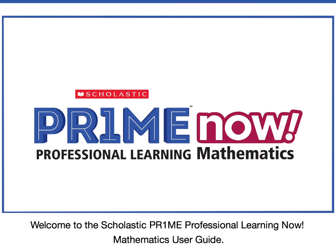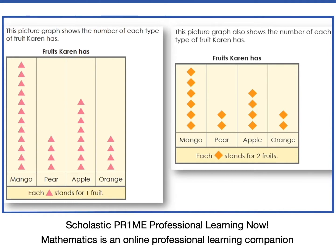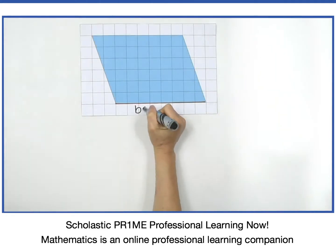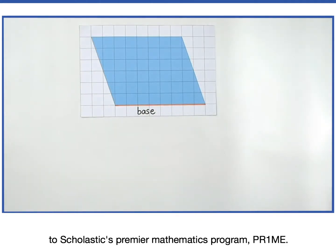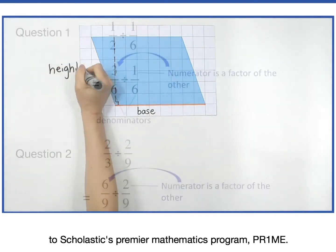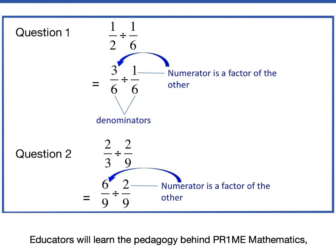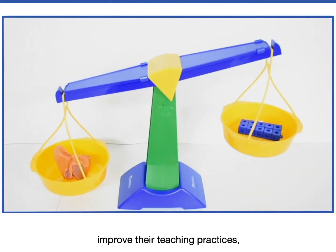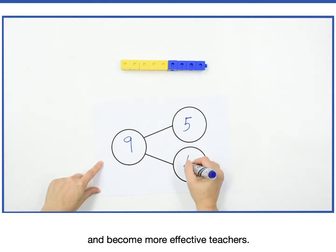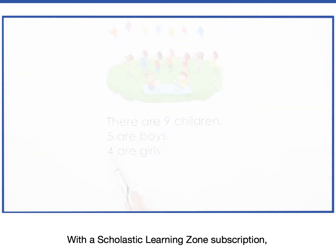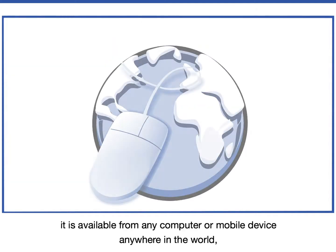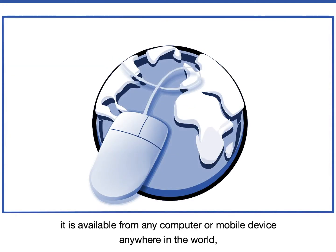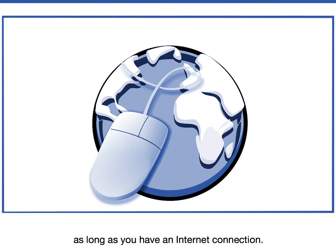Welcome to the Scholastic Prime Professional Learning Now Mathematics User Guide. Scholastic Prime Professional Learning Now Mathematics is an online professional learning companion to Scholastic's premier mathematics program, Prime. Educators will learn the pedagogy behind Prime Mathematics, improve their teaching practices, and become more effective teachers. With the Scholastic Learning Zone subscription, it is available from any computer or mobile device anywhere in the world, as long as you have an internet connection.